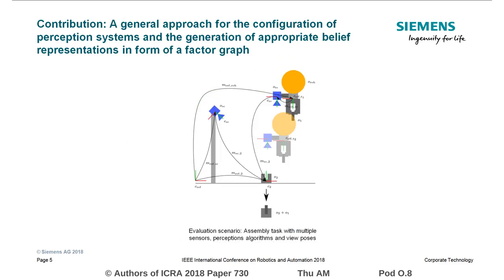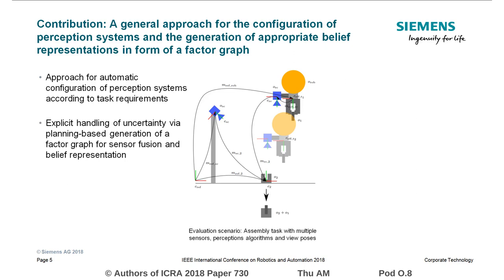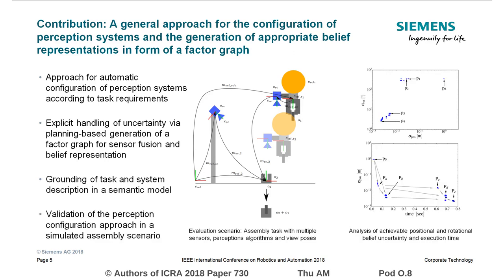To conclude, we presented a general approach for the configuration of perception systems taking into account the requirements of the task. Uncertainty is handled in a generic manner by the planned generation of a factor graph for sensor fusion and belief representation. Additionally, a semantic model has been developed to capture the task and system description in a reusable manner. Finally, the approach has been validated in a simulated assembly scenario with multiple sensors, perception algorithms and view poses. Overall, it showed good results in the planning of perceptual actions as well as the uncertainty estimation.